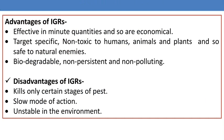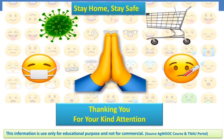Advantages of IGRs include: effective in minute quantities and therefore economical; target-specific and non-toxic to humans, animals, and plants, making them safe to natural enemies; and biodegradable, non-persistent, and non-polluting. Disadvantages include: they kill only certain stages of insects, have a slow mode of action, and are unstable in the environment. This concludes the recent biorational methods of IPM. Thank you.